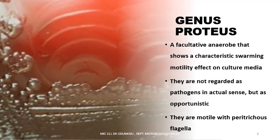Proteus is a fantastic member of Enterobacteriaceae which is also a facultative anaerobe. It has a unique characteristic called swarming. If you look at the diagram embedded on the slide, you will see how it is represented on the agar plate. This swarming characteristic is one unique trait that distinguishes Proteus from every other microorganism, not just Enterobacteriaceae.